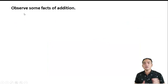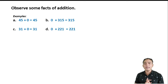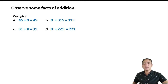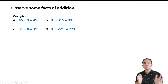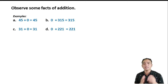Let us observe some facts of addition. For example: 45 plus 0 equals 45; 0 plus 315 equals 315; 31 plus 0 equals 31; and 0 plus 221 equals 221. Notice that if you add any number to 0, the answer will be the number itself.